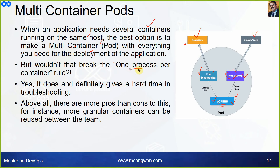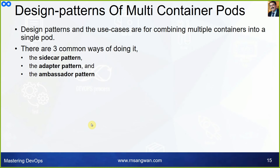While this breaks the one-process-per-container rule and makes troubleshooting harder, there are more pros than cons. For instance, more granular containers can be reused between teams. There are design patterns for specific scenarios where creating multi-container pods makes sense. The design patterns for combining multiple containers into a single pod are: the Sidecar pattern, the Adapter pattern, and the Ambassador pattern.